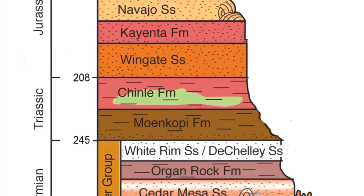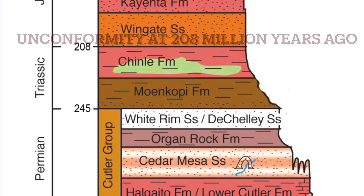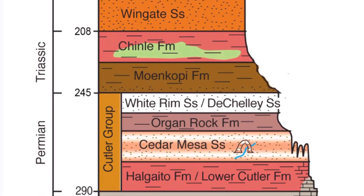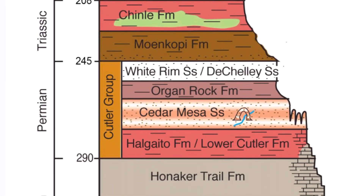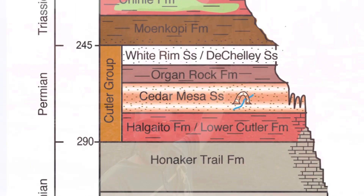Those are individual channel bodies separated by floodplain, and there's the aeolian Wingate — that's Jurassic — and the Chinle below is Triassic. There's an unconformity between them, just like we saw in the San Juan Basin where Jurassic is separated from Triassic by an unconformity. It's regional — here's that unconformity again.